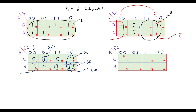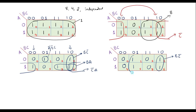Now consider another example with values 0,1,0,1 and 0,1,0,1. With these two 1s we can do one pair; the value will be B C-bar. And here also we can do one pair, since a group of 4 or 8 is not possible; the value of this will be B-bar C.